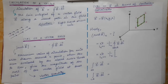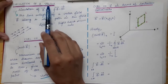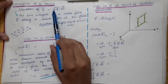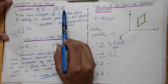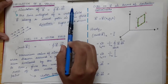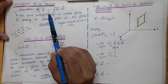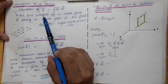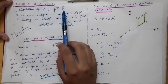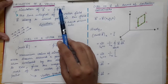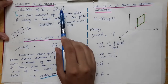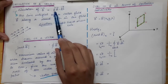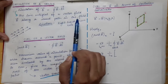The next topic we are going to start is the circulation of a vector, and then we will define what is the curl of a vector field. The circulation of a vector is defined as the line integral of a vector field over a closed path.